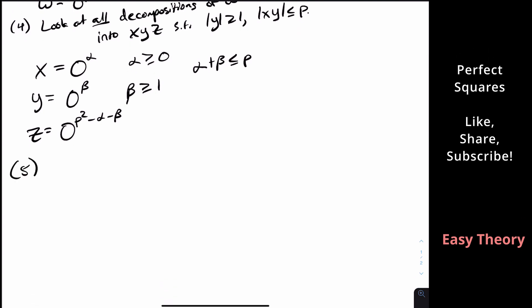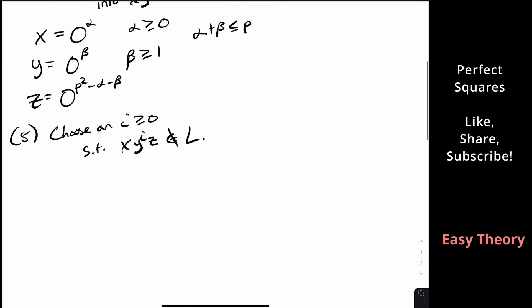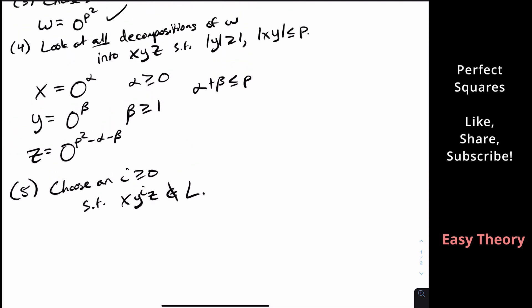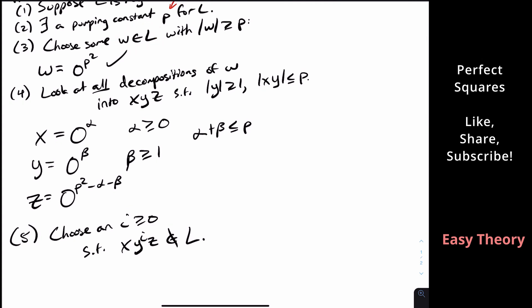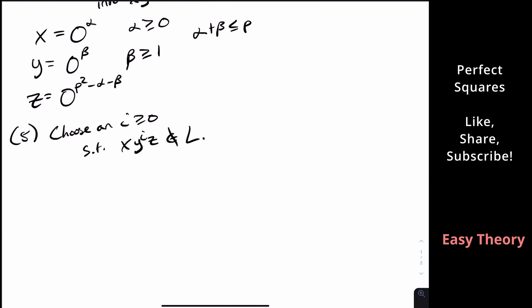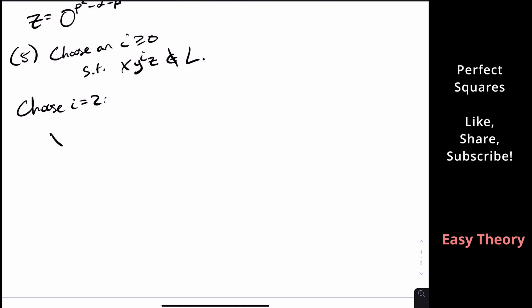The next step is to choose a value i ≥ 0 such that x·yⁱ·z is not in the language, giving us a contradiction. We should not pick i = 1, because that's just the original string W, which is in L. So let's choose i = 2. Then x·y²·z means x followed by two copies of y followed by z. The x part has α zeros, the two y's together contribute 2β zeros, and z has P² − α − β zeros.